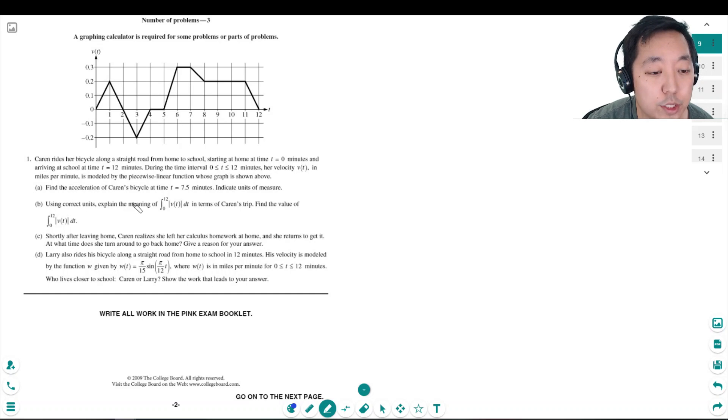Find the acceleration of Karen's bicycle at times t equals 7.5 minutes in case units of measure. So this is velocity and t equals 7.5 is here. So I want the slope here. This is the slope.